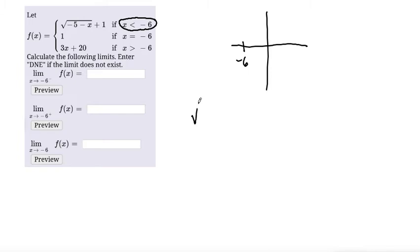So let's plug in. We have the square root of -5 plus -6 plus 1. So when we simplify this, or sorry, not plus, let me go back, minus -5 minus -6 plus 1.